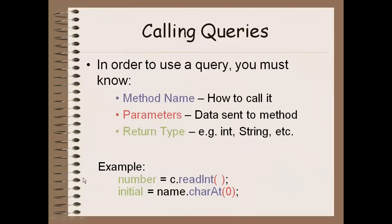An example of using a query here, so I've got a variable called number, and it's going to be set to be equal to whatever is returned by reading. In this case, it's going to tell you what the user input into the console stored in number. Here we've got the variable called initial, and it's going to be equal to the character at position zero of my name string. So this is going to return that character and store it into here.